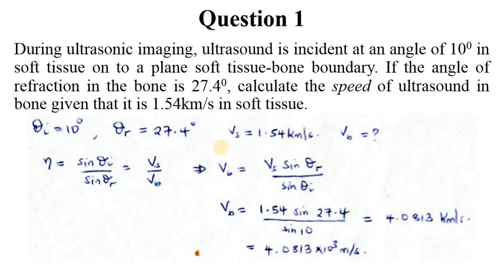That basically takes us to finding the speed in the bone. We are given the incident angle as 10 degrees, angle of refraction as 27.4 degrees, velocity in the soft tissue is 1.54 kilometers per second, and we are interested in velocity in the bone, which is VB.